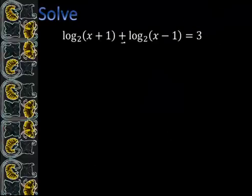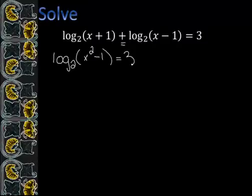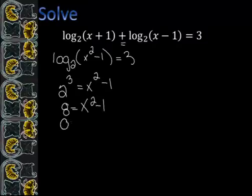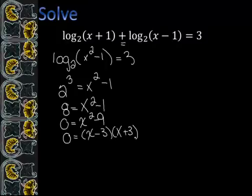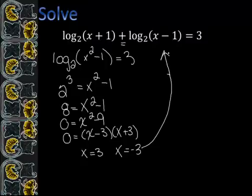When we solve this one, remember addition means multiplication. So when we take x plus 1 times x minus 1 it's x squared minus 1. Now we're going to use what we learned previously: we'll have 2 to the third equals x squared minus 1. 2 to the third is 8. We want it equal to 0, then we factor, and we get x equals 3 and x equals negative 3.